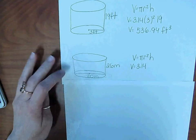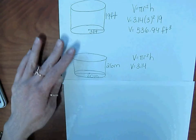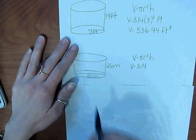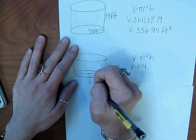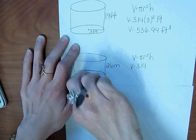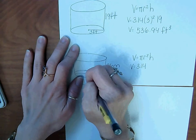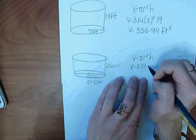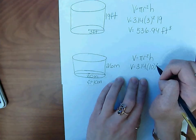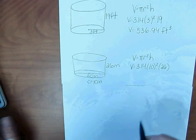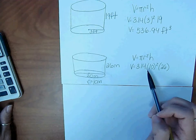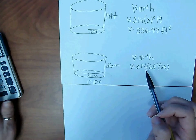Remember, diameter is twice the size of the radius, or you would have to divide the diameter by 2 to get radius. So the radius here is 10 meters. So 3.14 times 10 squared times the height, 26. So this is 3.14 times 10 times 10 times 26.